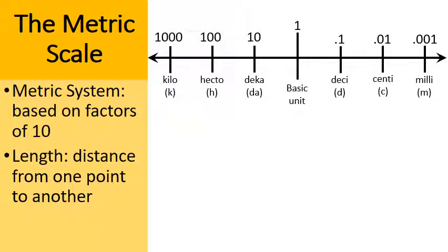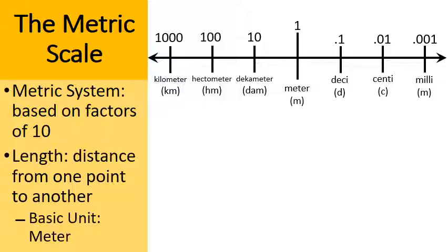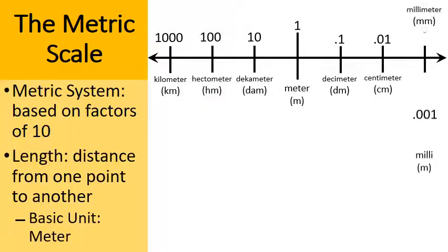Let's start looking at length. The basic unit of measuring length in the metric system is built around something called a meter. The basic unit is labeled one meter. Ten meters is a decameter, 100 meters is a hectometer, and 1,000 meters is a kilometer. Going the other direction: a tenth of a meter is a decimeter, a hundredth of a meter is a centimeter, and a thousandth of a meter is a millimeter.